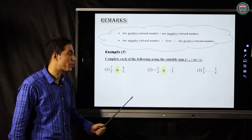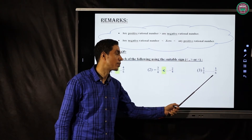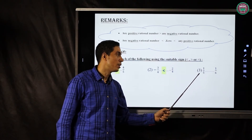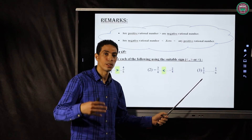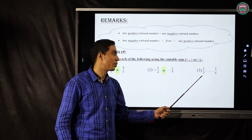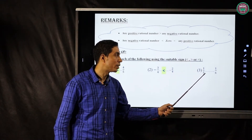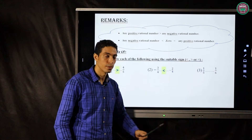Number three: one over five and one over six. If the numerators are the same, then the fraction with the smallest denominator is bigger. So one over five is bigger than one over six.